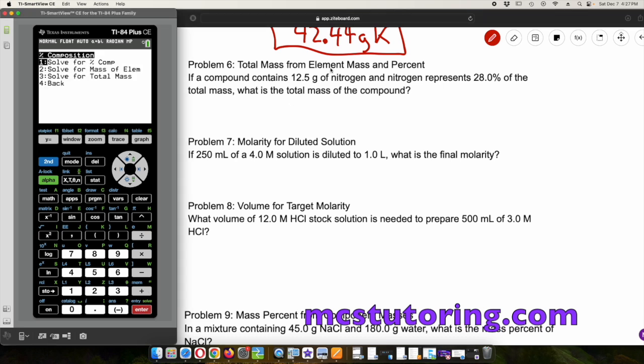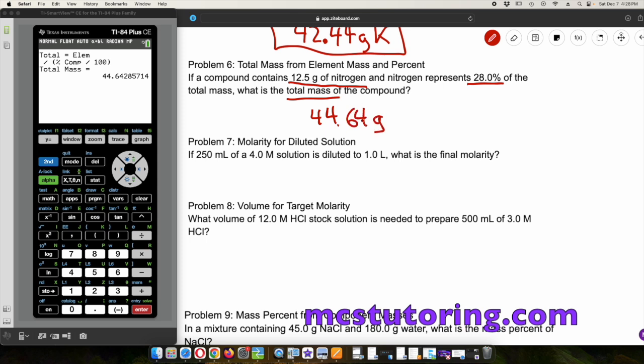Total mass from element mass and percent. If a compound contains 12.5 grams of nitrogen and nitrogen represents 28% of the total mass, what is the total mass of the compound? We're going to solve for total mass here. The mass is 12.5, it's not gram formula mass, it's the mass of it within that compound itself. The percent composition is 28, and it looks like the total mass is 44.64 grams of the total compound.